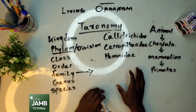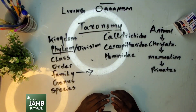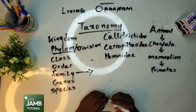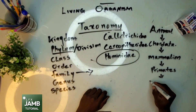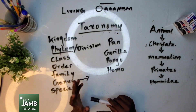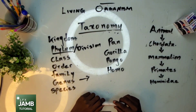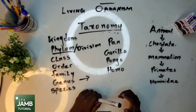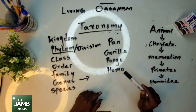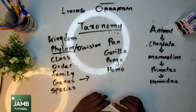Under Primates we have several families — about three families. Hominidae belongs to the great apes, including gorillas, chimpanzees, orangutans, and humans. We fall under Hominidae. Now under Hominidae we have several genera like Pan, Gorilla, Pongo, and Homo. Examples of Pan include chimpanzees and bonobos; Gorilla includes gorillas; Pongo includes orangutans.